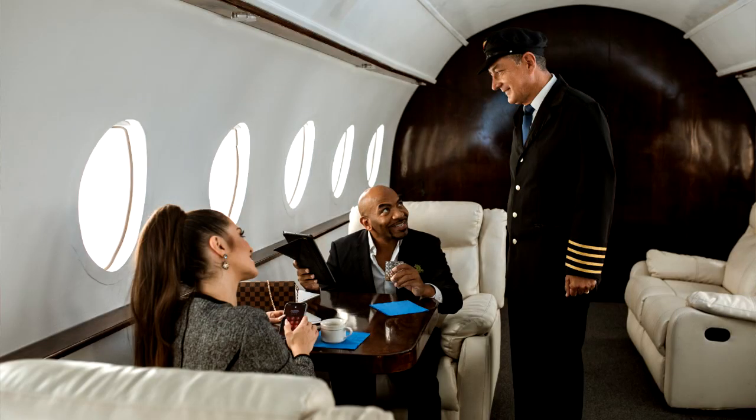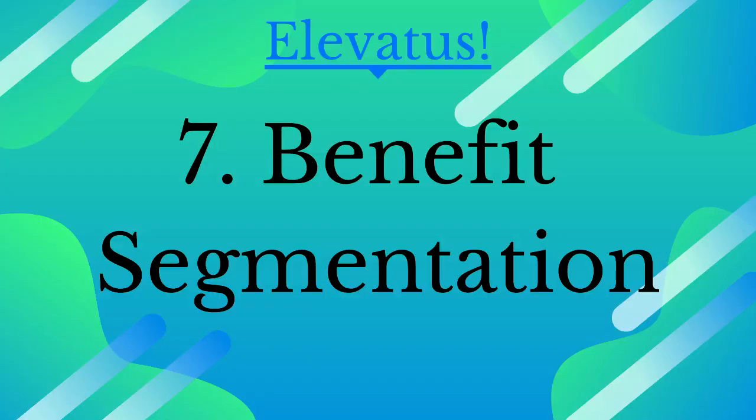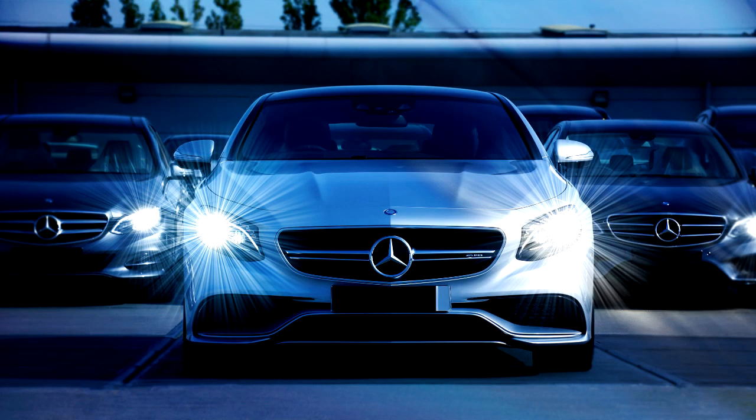The seventh is benefit segmentation. This approach focuses on the benefits sought by different customers — what are the most important benefits for different groups? For example, in the beauty industry there are skincare products for dry skin, oily skin and the like, makeup products for different uses, and products for moisturizing and beautifying. In the car industry, benefits like convenience, prestige, economy and value for money are a key focus — different cars deliver value in terms of prestige while others focus on economy.